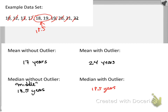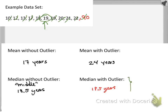Let's also explore what happens if I added a data point — if I created an 11th data point of 90. We would go through and cross out numbers until we get to the middle number, and you can see that our middle value would be 19. So because the median value either doesn't change or changes very slightly when we add an outlier, we see that the median is a resistant measure of center.